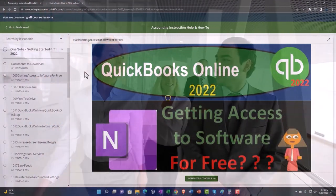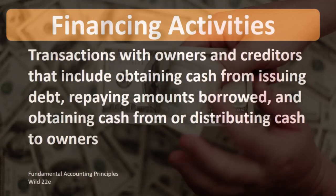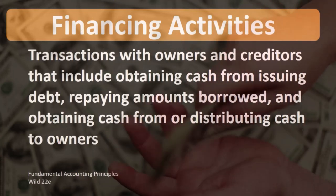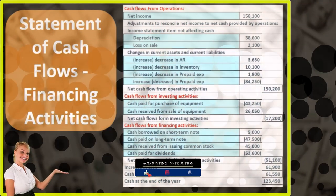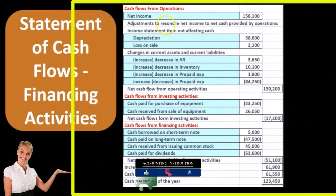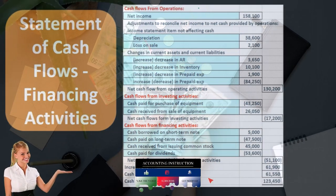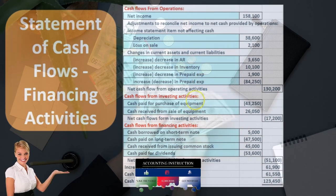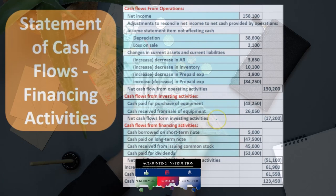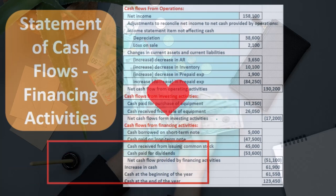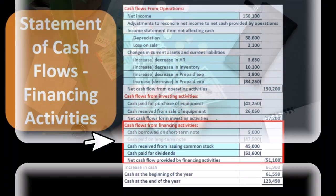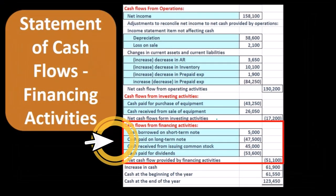We're considering financing activities in the context of a statement of cash flows. A statement of cash flows has three parts: cash flows from operating activities, cash flows from investing activities, and cash flows from financing activities. This is an example of a worksheet of a statement of cash flows, and we are focusing here on the cash flows from financing activities.